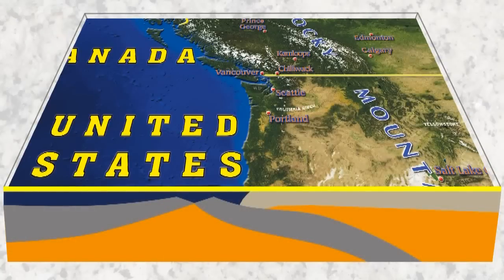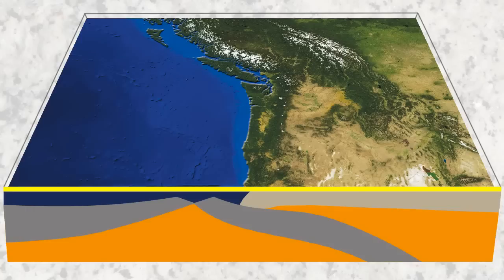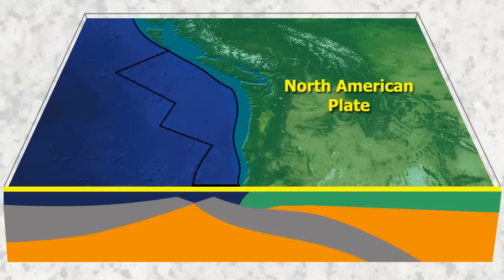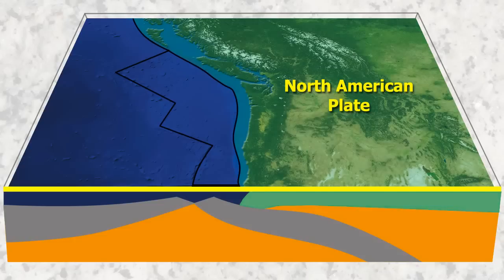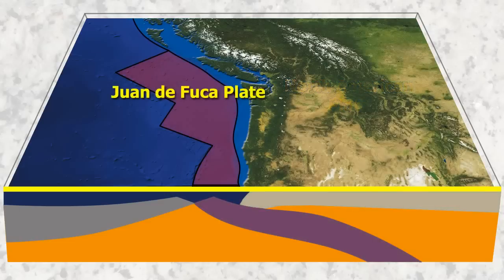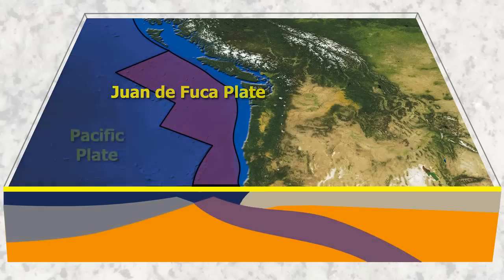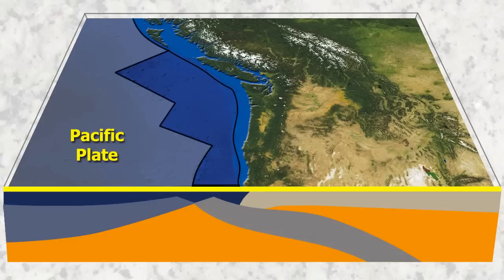Let's start by looking at the pieces we're going to be examining in this example. First up is the Earth's crust, which is made up of the Earth's tectonic plates. We will be looking at three plates in this example: the North American plate, the Juan de Fuca plate, and the Pacific plate.